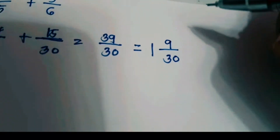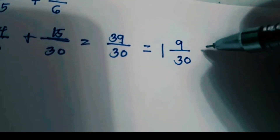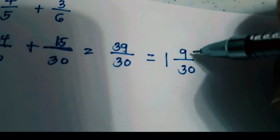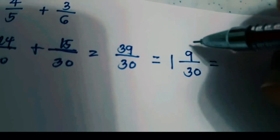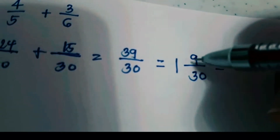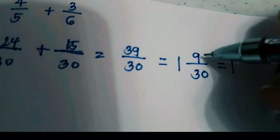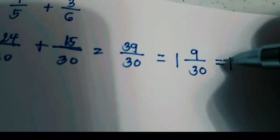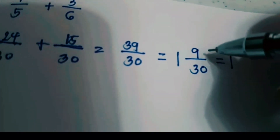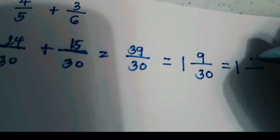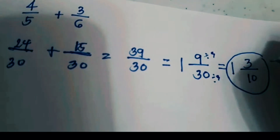Copy the denominator. But before you finalize your answer, examine the fraction — numerator 9 and denominator 30. Check whether there is a number that can divide both 9 and 30. If there is, convert to lowest term. Find the GCF of 9 and 30, which is 3. So 9 divided by 3 equals 3, and 30 divided by 3 equals 10. Your final answer is 1 and 3/10.